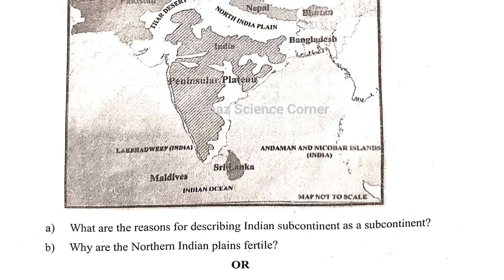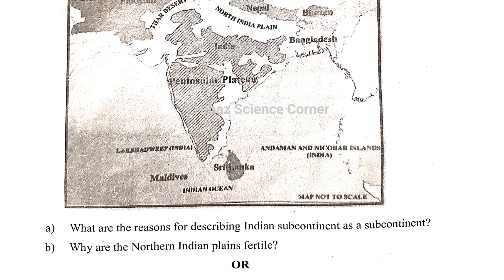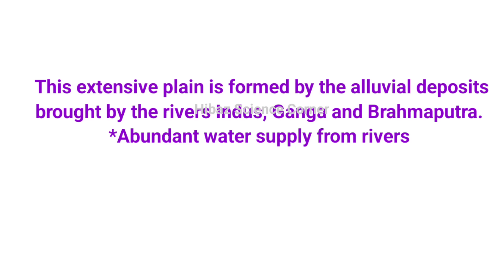The Northern Indian Plains are fertile. This extensive plain is formed by the alluvial deposits brought by the rivers Indus, Ganga, and Brahmaputra. It is called the Indian Plains, and it has abundant water supply from the rivers.